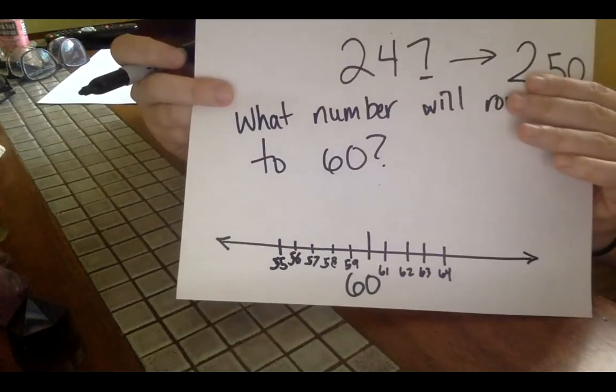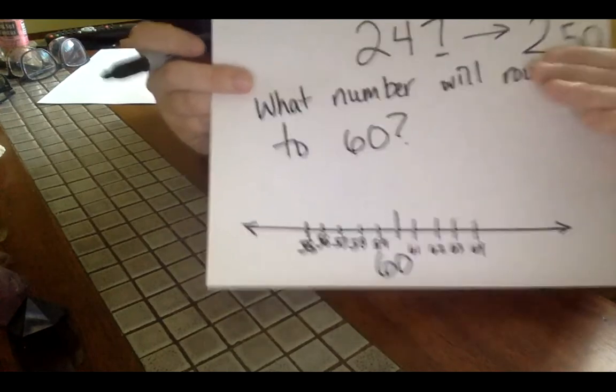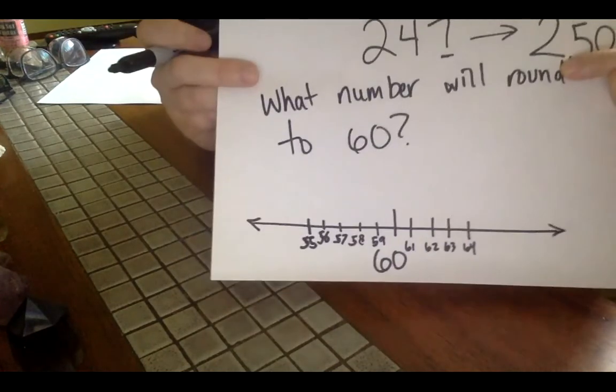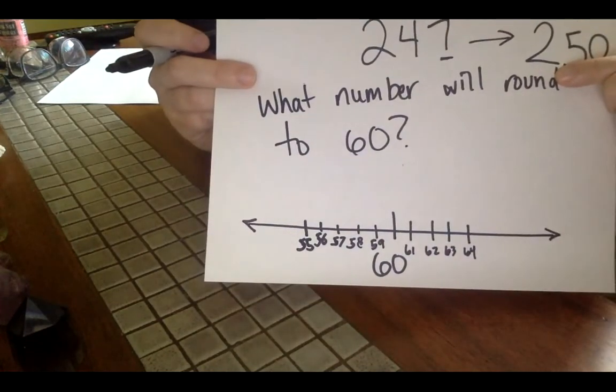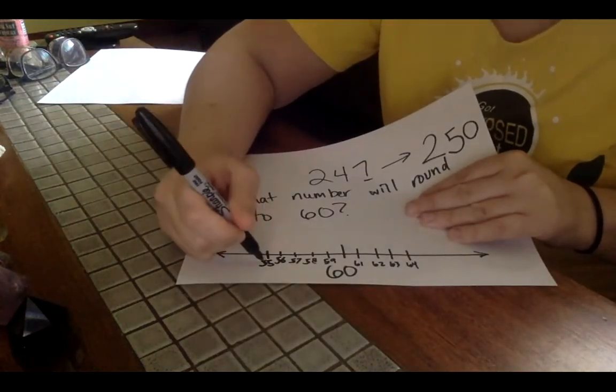That five through nine is going to round up. So any one of those numbers would round to 60. 55, 56, 57, 58, 59, 61, 62, 63, 64 would all round to 60.